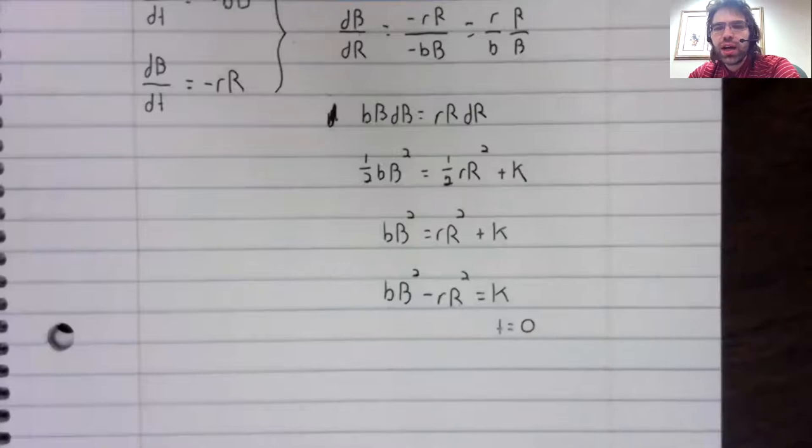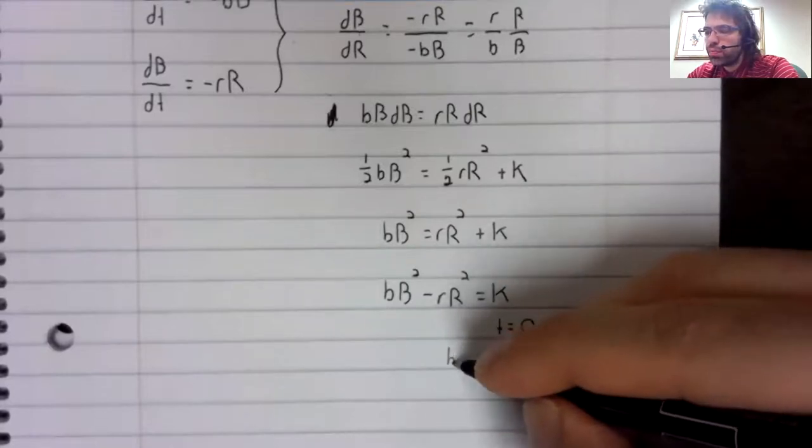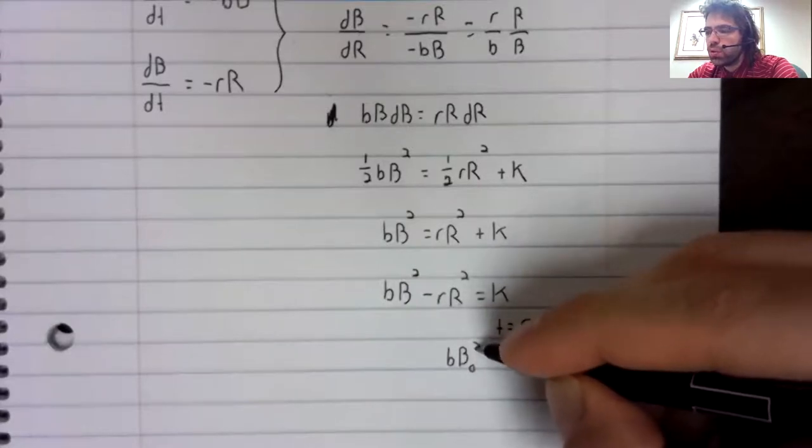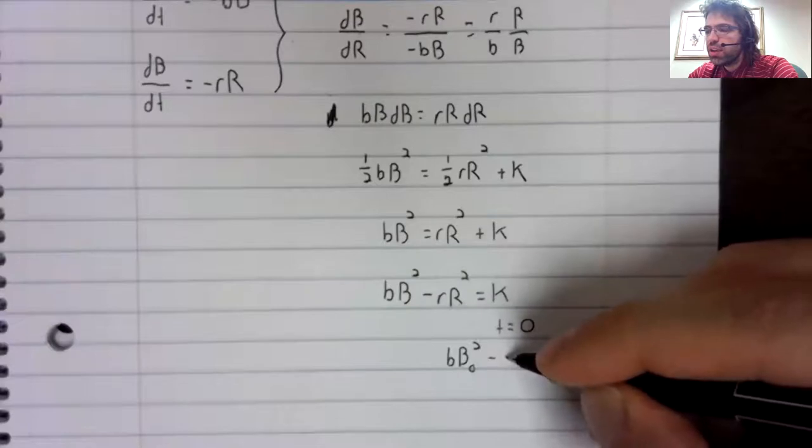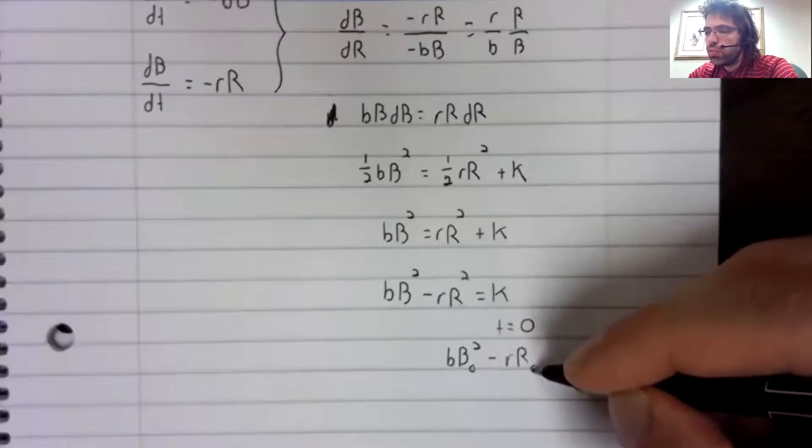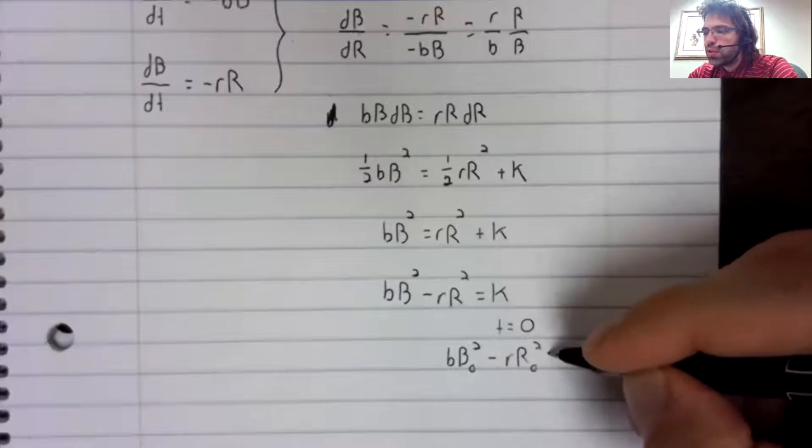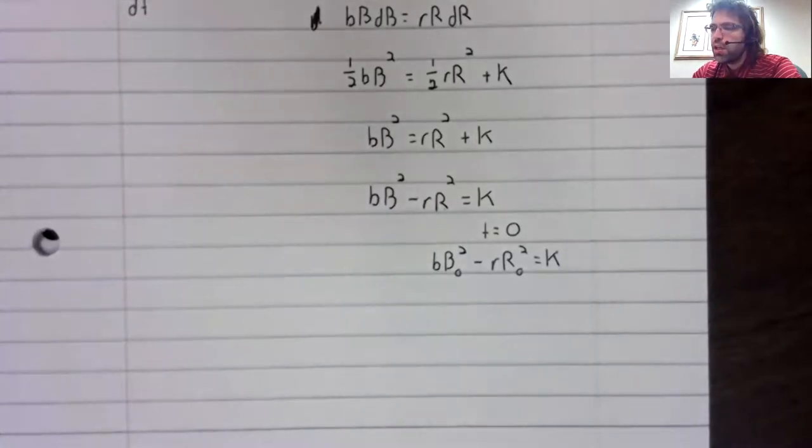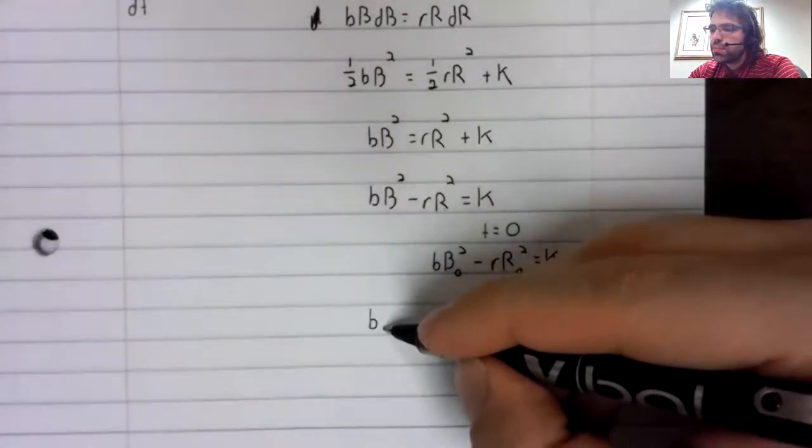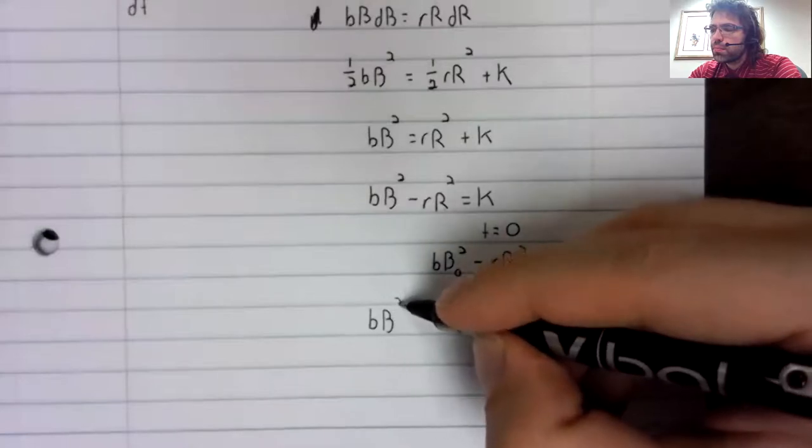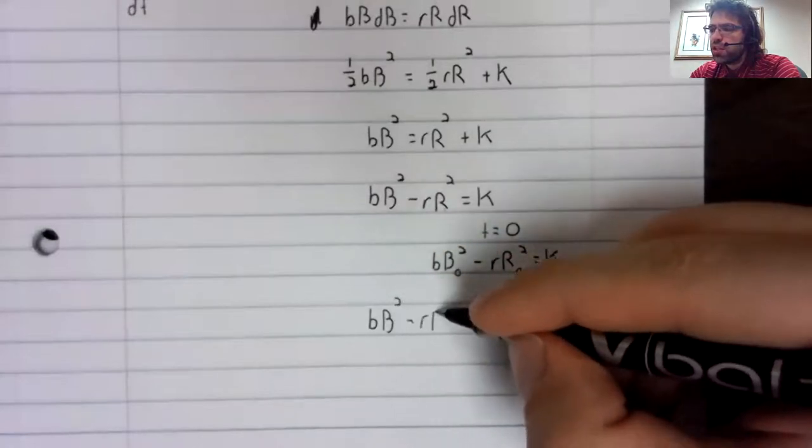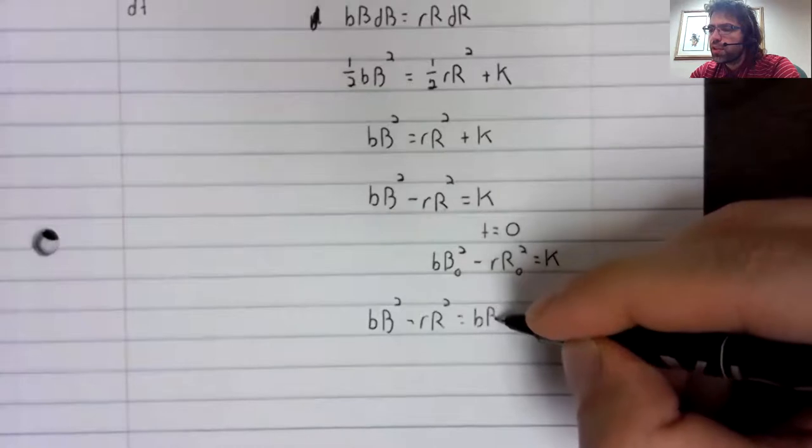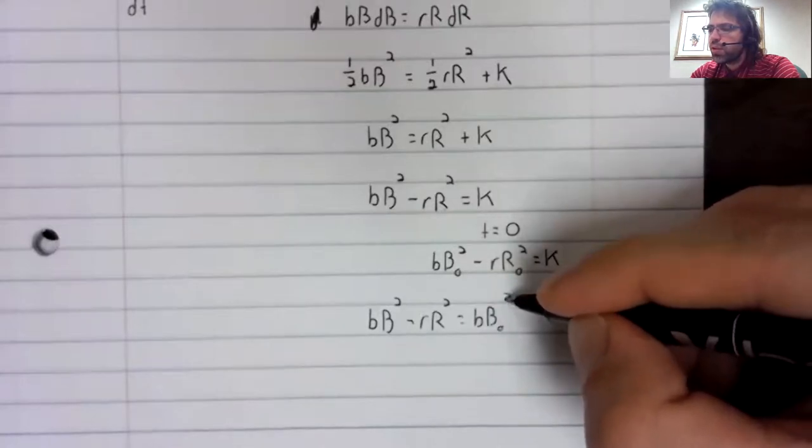I'll let time be zero and I'll write B sub zero in the place of B of zero. Likewise, R. And that gives me this equation.